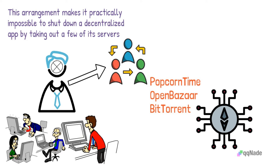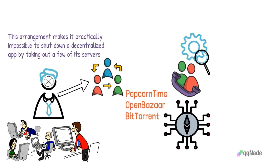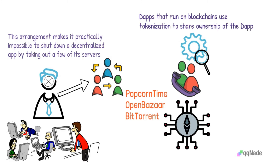DApps built on blockchains use smart contracts to control how they function. Smart contracts are simply pieces of code that execute given instructions when certain conditions are met. DApps that run on blockchains also use tokenization to share ownership of the dApp.